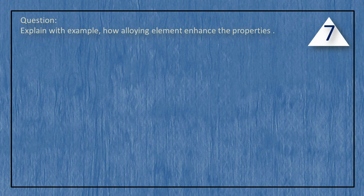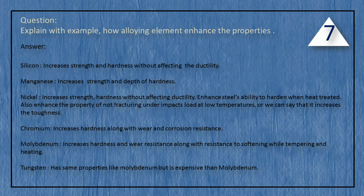How do alloying elements enhance the properties? Silicon increases strength and hardness without affecting ductility. Manganese increases strength and depth of hardness. Nickel increases strength and hardness without affecting ductility, enhances the steel's ability to harden when heat treated, and also enhances the property of not fracturing under impact loads at low temperatures — that is, it increases toughness. Chromium increases hardness along with wear and corrosion resistance. Molybdenum increases hardness and wear resistance along with resistance to softening while tempering and heating. Tungsten has the same properties as molybdenum but is more expensive.